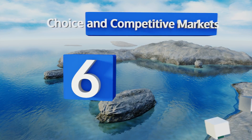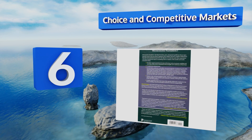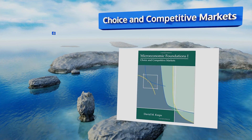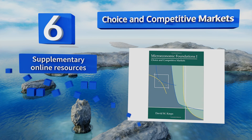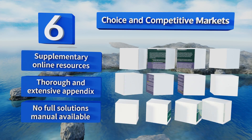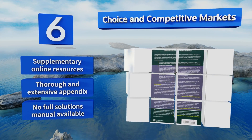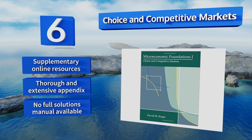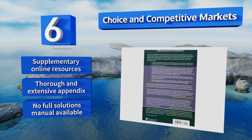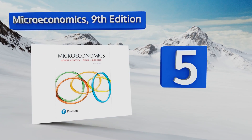Moving up our list to number six, Choice and Competitive Markets is written in a style that encourages students to view each economic theory as a work in progress rather than facts to be memorized. Sure to challenge and enlighten, this rigorous text includes in-depth explanations of mathematical concepts. There are also supplementary online resources along with a thorough and extensive appendix. However, no full solutions manual is available.